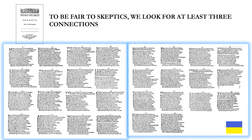To be fair to skeptics, we look for at least three connections. One connection might be the result of chance or randomness. Two might be a coincidence. Three or more shows deliberate intent.